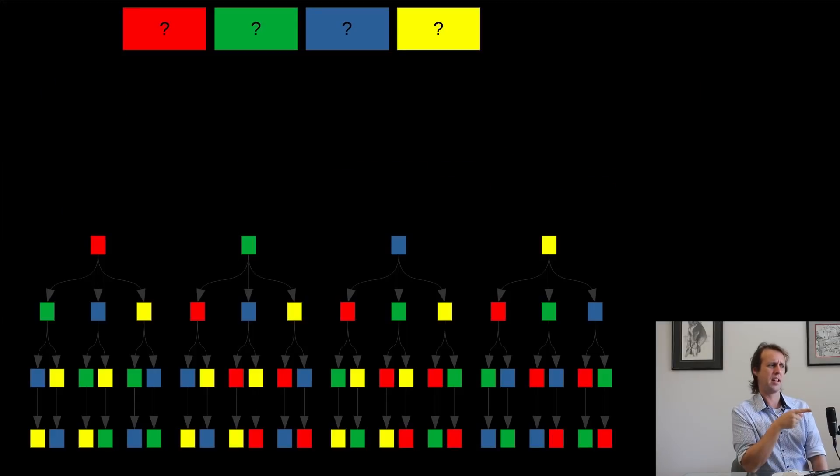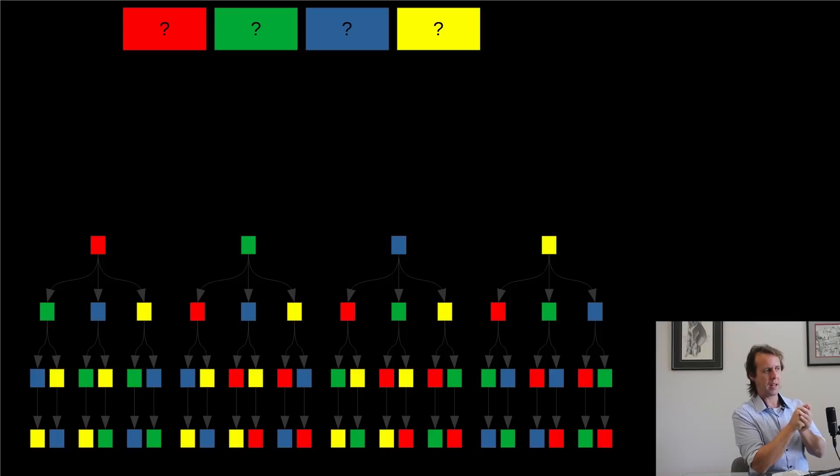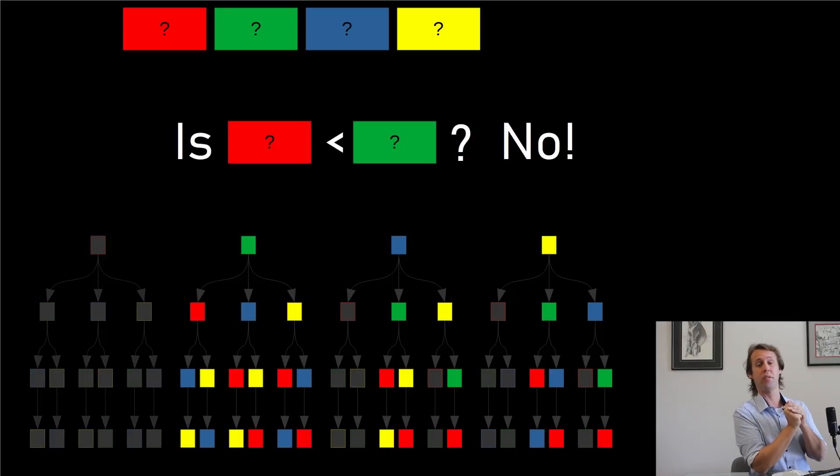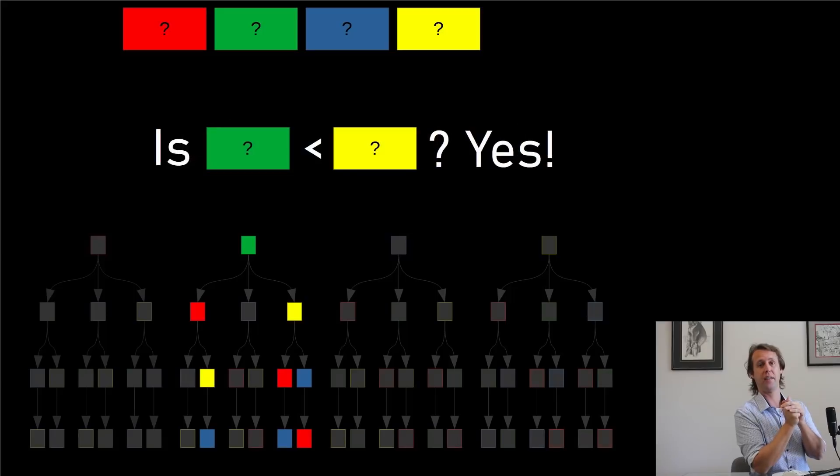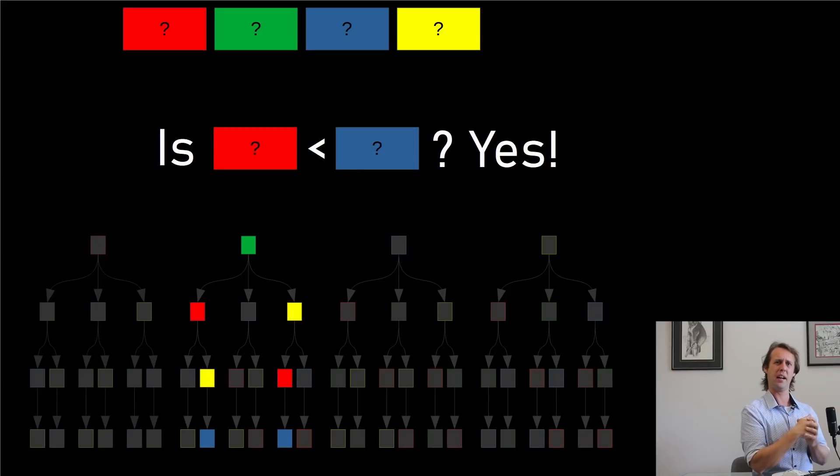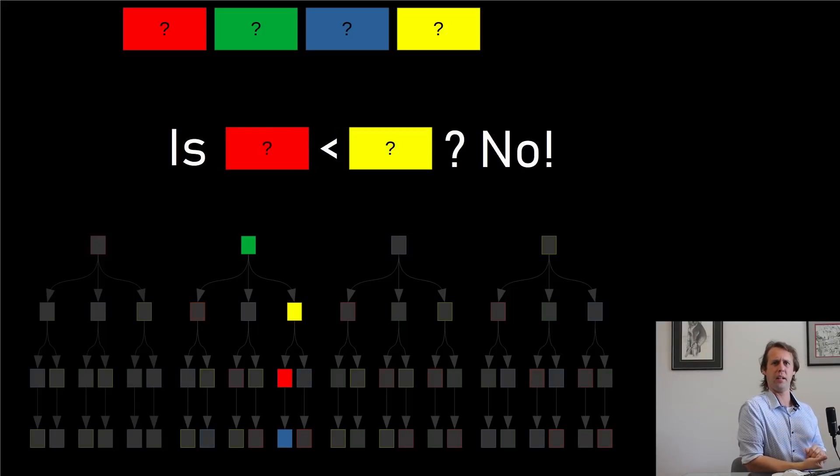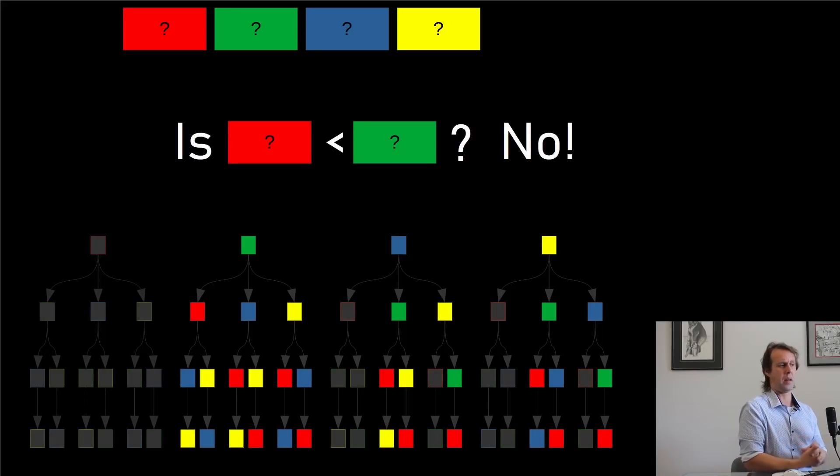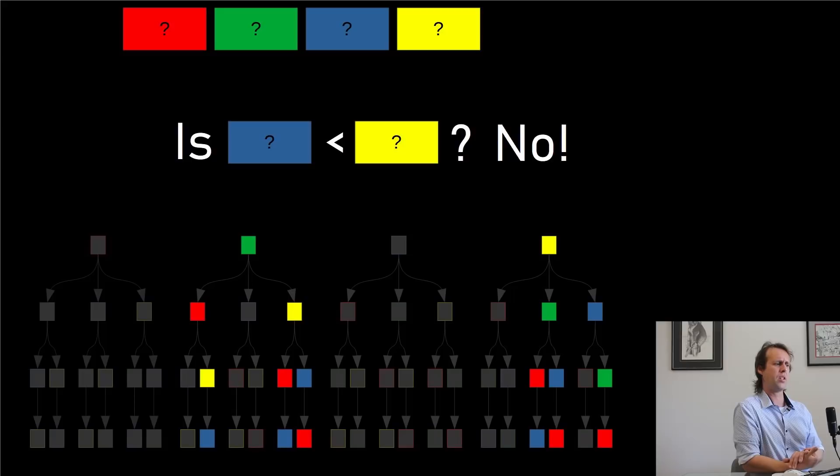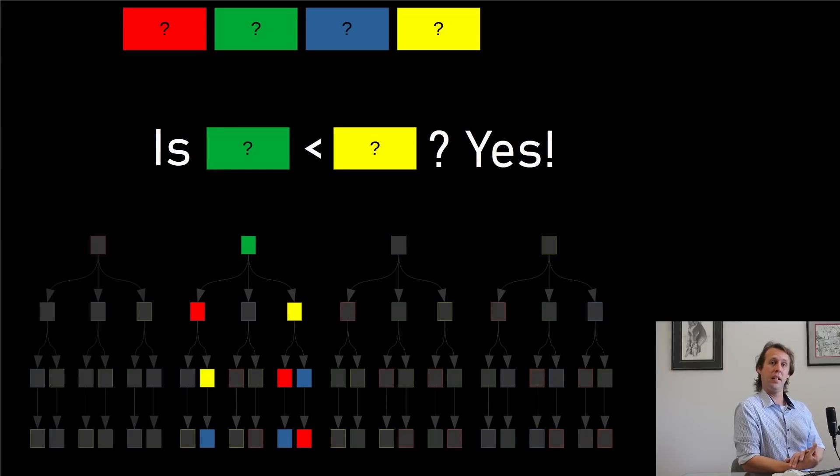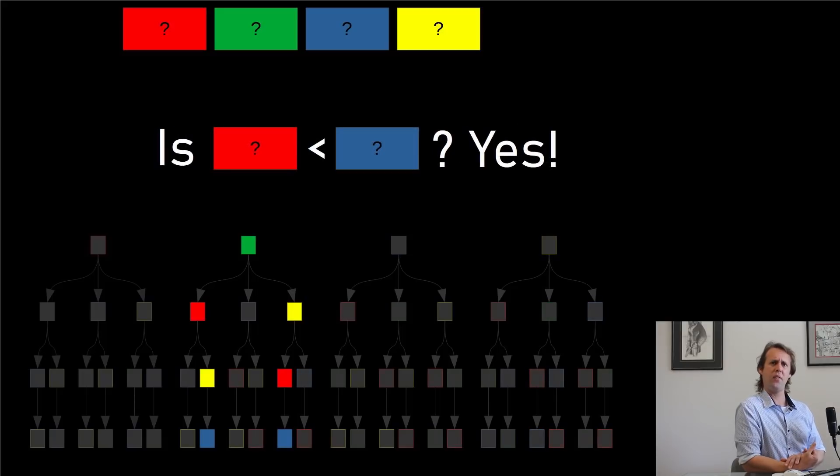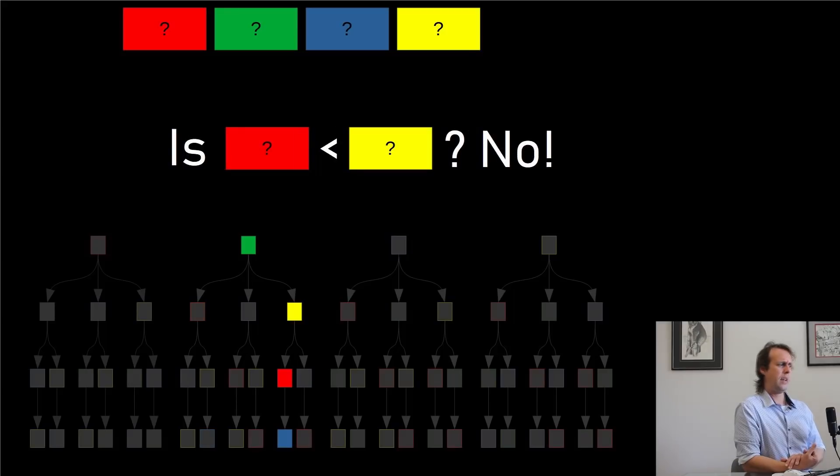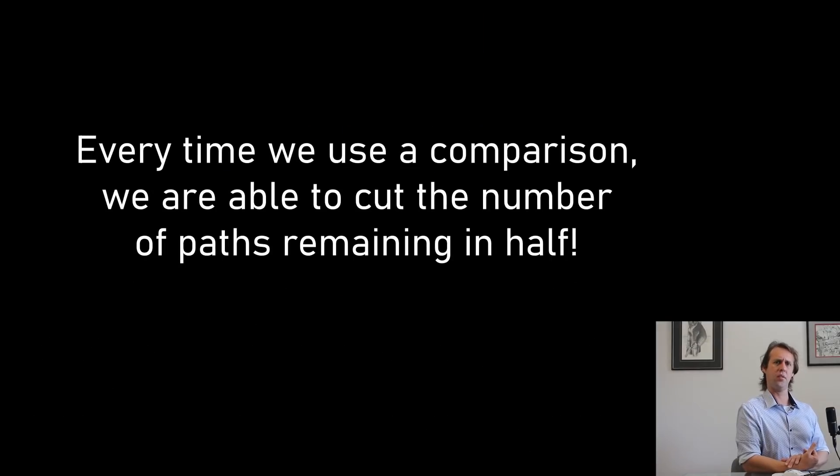So what you'll notice is that every time we asked a yes or no question, we were pretty much able to halve the total number of paths in our tree that we still had left to check. You won't always halve the total number of paths that you've still got to check, because sometimes there'll be an odd number of paths. Yeah, but pretty much every time you ask a comparison, be it less than or greater than any of those yes-no questions, you can pretty much halve the total number of permutations that you have left to check.